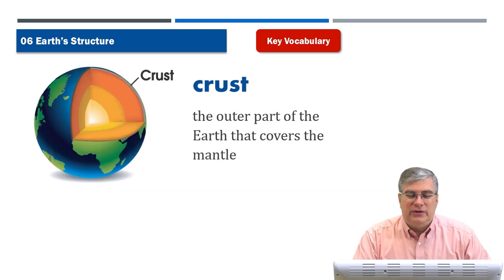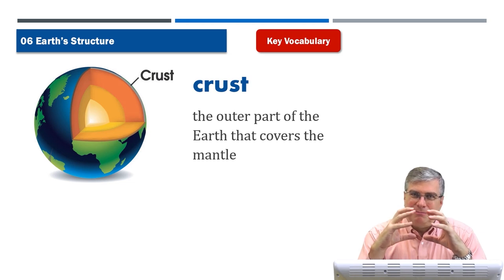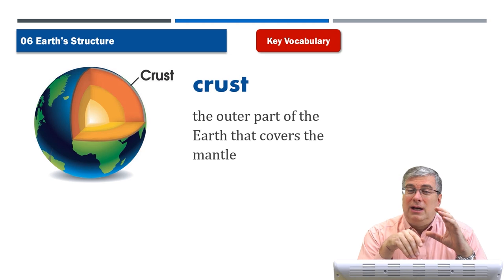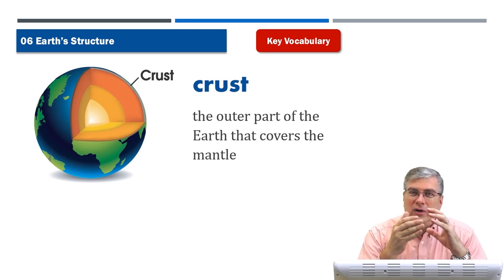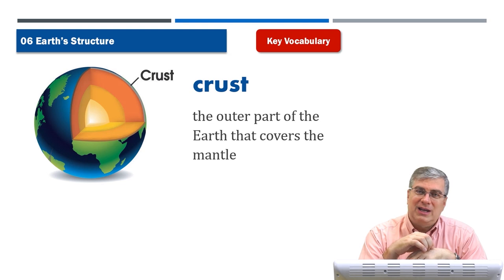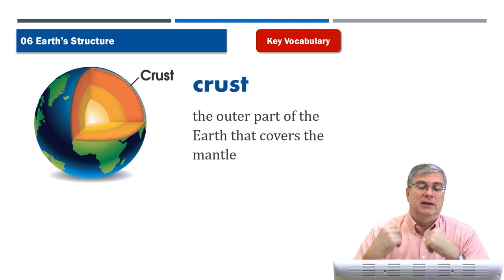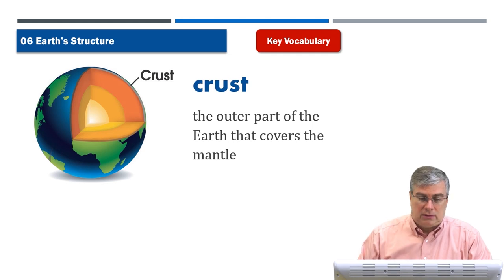'Crust' — when you bake bread, it's soft in the middle but a little hard and browner on the outside — that's the crust of the bread. The earth has a similar idea. The crust is the top layer of the earth's surface — the outer part of the earth that covers the mantle. The crust of the earth is very thick compared to us, but relatively thin in relation to the rest of the earth.